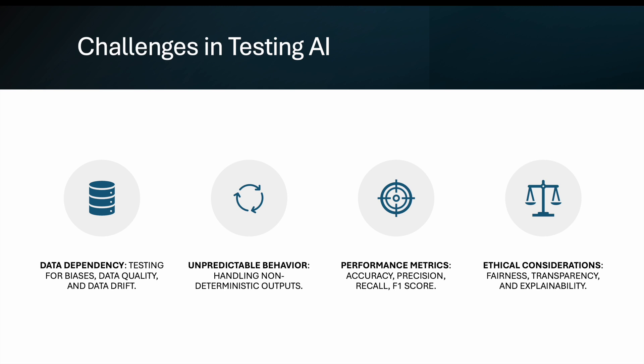Second is unpredictable behavior. The outputs of AI systems are unpredictable many times — you need to check how it handles that, and whether whatever unpredictable output you're getting is fair and correct. Then there are performance metrics like accuracy, which is one of the key metrics — for example, if you ask 100 questions and 90 are accurate, that's 90% accuracy.